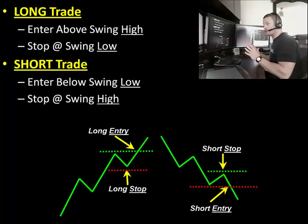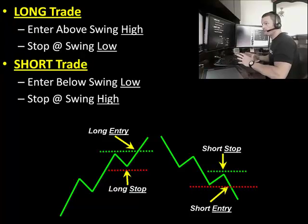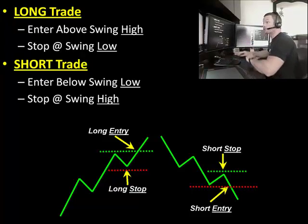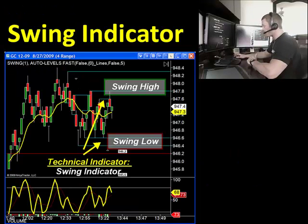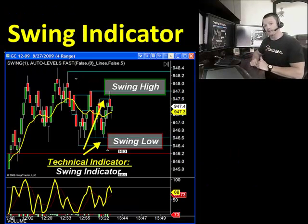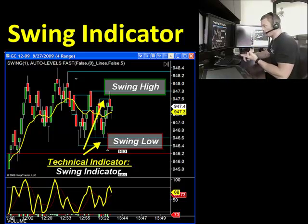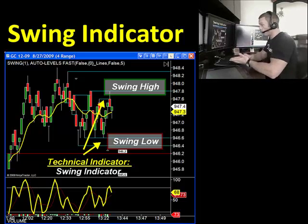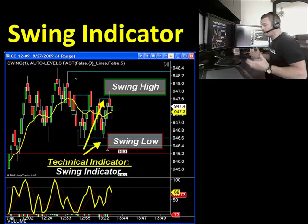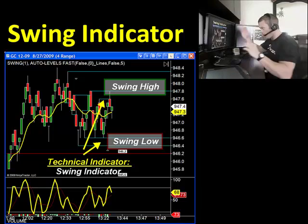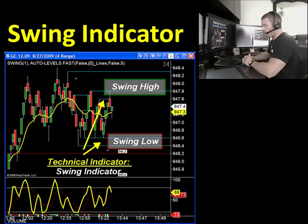We're using these extremes for the entry and for the stop loss. The key is: for a short trade, enter below the swing low; for a long trade, enter above the swing high. When you join us tomorrow morning in the live trade room at 7:45 Eastern Time, you're going to see we use a swing indicator. Combine this with the pace of the tape indicator and the auto levels — the swing indicator is going to define all these important swing highs and swing lows for you automatically, so you don't need to manually check whether the high is higher or the low is lower.